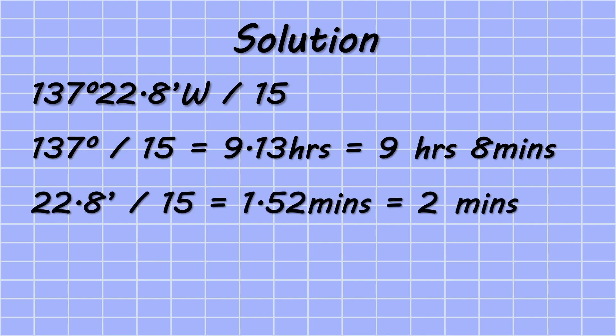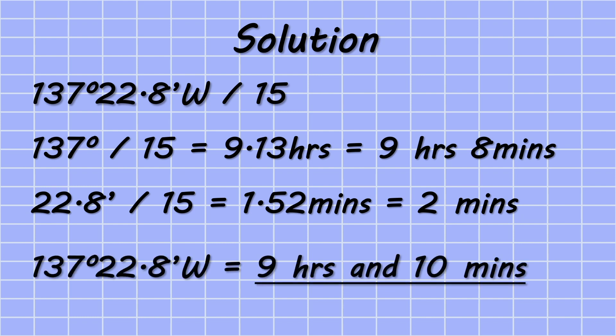For the 22.8 minutes of longitude, when this is divided by 15 this gives us 1.52 minutes, which using our rounding as learned earlier gives us 2 minutes. In order to find the total arc to time we add both the degree value and the minute value together to give a total of 9 hours and 10 minutes.